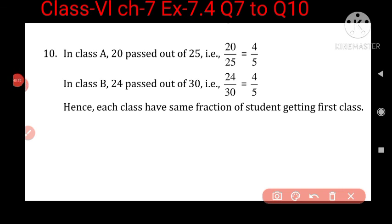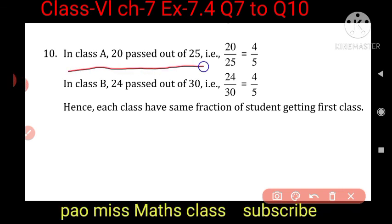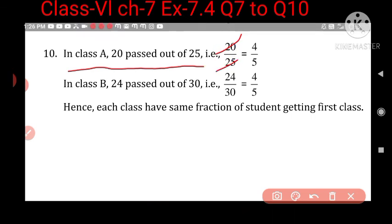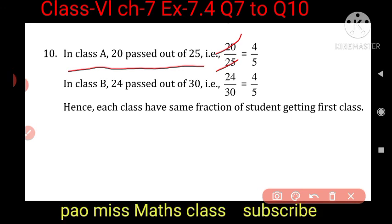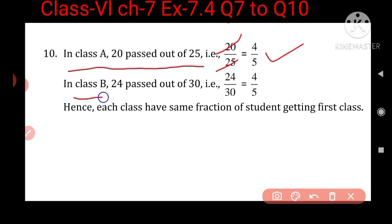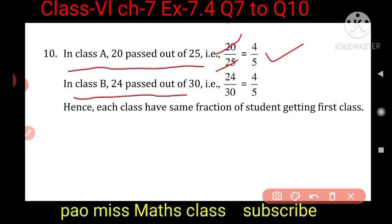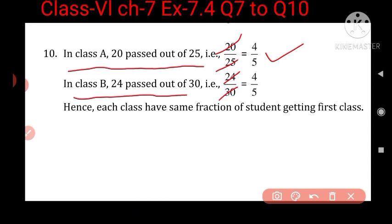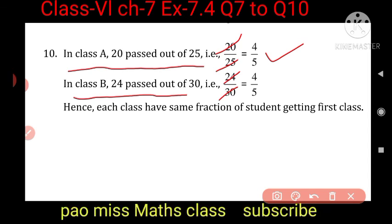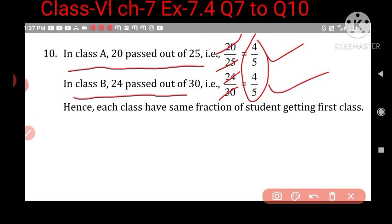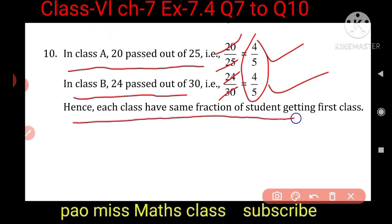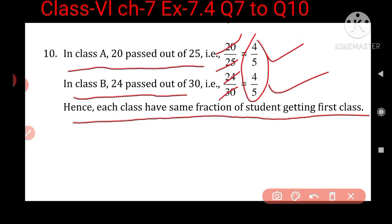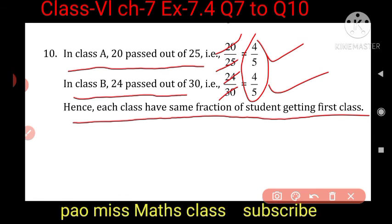For Class A: 20 upon 25 — both divisible by 5 — reduces to 4 upon 5. For Class B: 24 upon 30 — both divisible by 6 — reduces to 4 upon 5. They are equal fractions. Hence each class has the same fraction of students getting first class. This was the last question of this exercise.